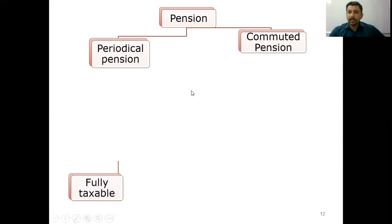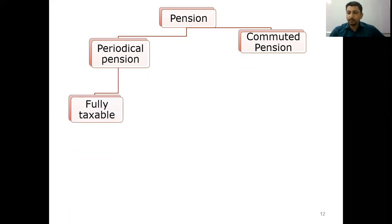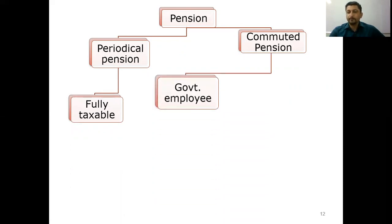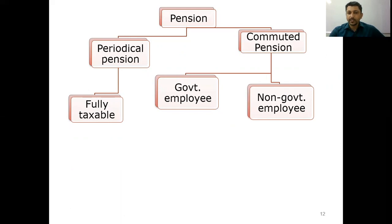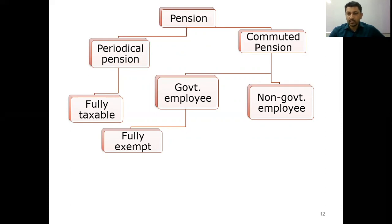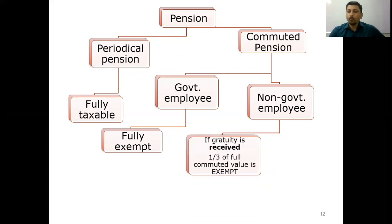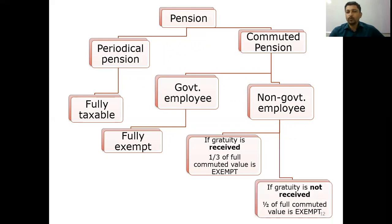Periodical pension is fully taxable, whereas commuted pension taxability depends on whether you are a government employee or a non-government employee. As far as commuted pension for a government employee is concerned, it is fully exempt from tax. For a non-government employee, commuted pension depends on the important factor of whether such employee receives gratuity or not. If a non-government employee receives gratuity and also has pension, then only one third of the full commuted value will be exempt. But if the non-government employee does not receive gratuity, then half of the full commuted value will be exempt.